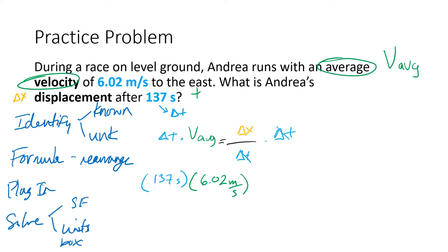There's a reason why I wrote it like this, because you have to look and make sure that your units will cancel out. So if you multiply across, technically this is over one second, so your seconds cancel out, you're left with meters. If you were given a time in hours, you would need to convert it to seconds. Anyway, so you multiply across, you end up with 137 times 6.02, and you end up with 824.74 meters.